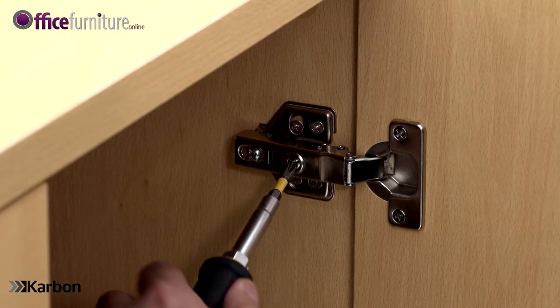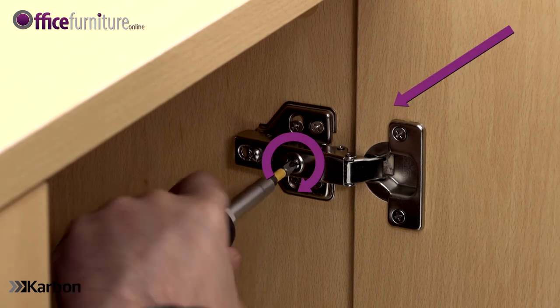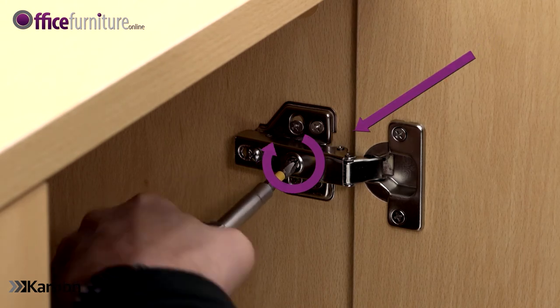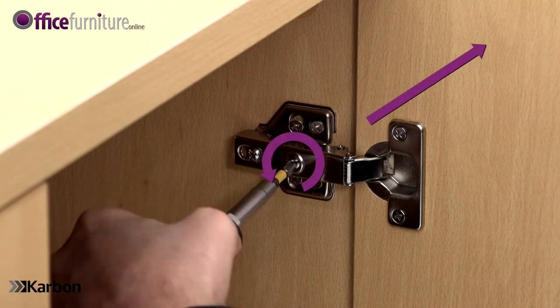By turning the front screw clockwise, the door will move towards the centre of the cupboard. Turning anti-clockwise will move the door away from the centre of the cupboard.